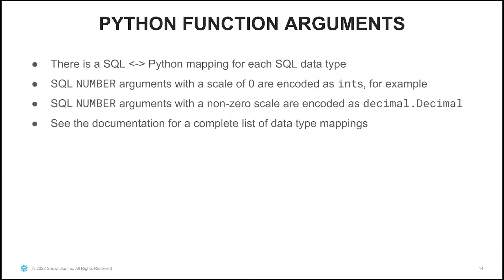When you create a Python function, you specify the arguments that you want to use. We have a specific SQL-to-Python mapping for each SQL data type that Snowflake supports. As an example, if you use a SQL NUMBER type with a scale of zero, we encode this as an int. However, if you use a SQL NUMBER type with a non-zero scale, we encode those as a decimal.Decimal value. You can see the documentation for a complete list of Snowflake's data type mappings for Python UDFs.